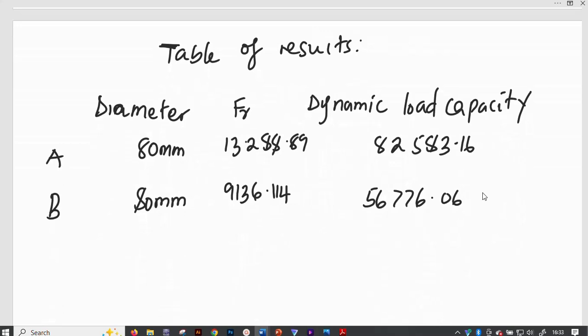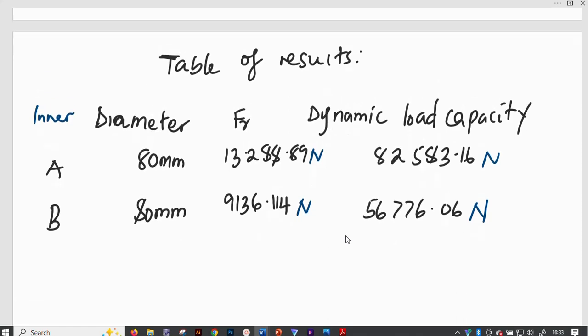So if we are to tabulate our results, we need to know the diameter of the inner diameter actually for bearings. The inner diameter for A is 80 millimeters. Inner diameter for B is 80 millimeters also. And the equivalent radial load is 13,288.89 Newtons. And for B is 9,136.114 Newtons. Then the dynamic load carrying capacity for A is 82,583.16 Newtons. And for B is 56,776.06 Newtons. Thank you for watching.